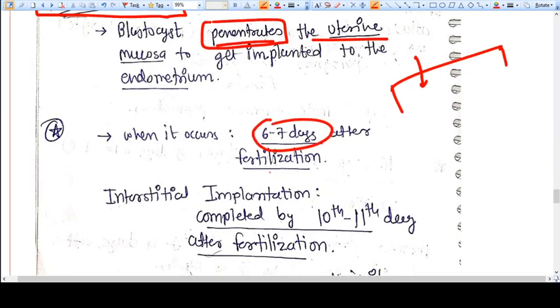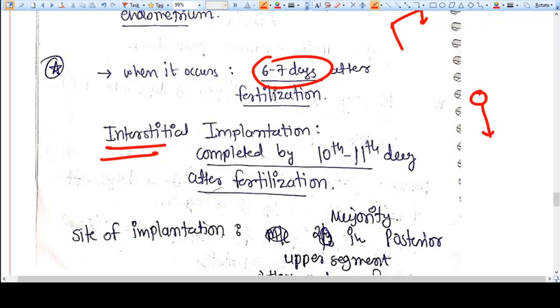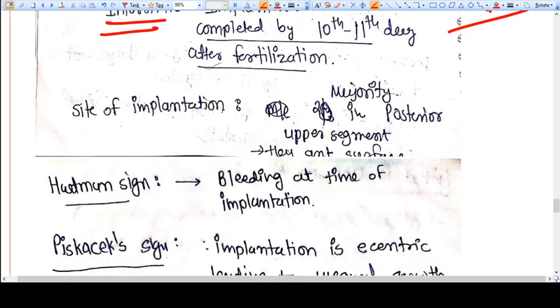What kind of implantation do we have in humans? We have interstitial implantation. That means the blastocyst goes inside the endometrium and gets implanted, not just attaching itself. It goes inside - that's called interstitial implantation.